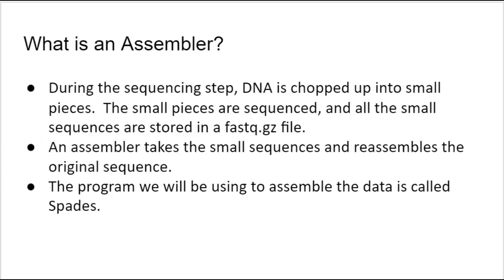An assembler is a computer program that does assembly. Remember that during DNA sequencing, the DNA is chopped up into really small pieces that we refer to as reads. The small pieces are sequenced — or the reads are the sequence — and then they are stored in fastq.gz files. That .gz means zipped, and fastq means a FASTA file with associated quality information. An assembler takes the information that the sequencer provides. Usually you do some trimming, some processing beforehand, some filtering out of low quality reads.